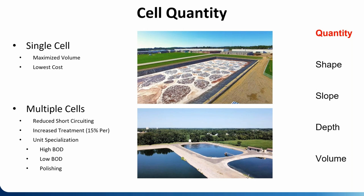Because multiple cells hold the waste in the treatment system longer, we get increased treatment. Our experience is that for every cell we add — up to about four or five — we get about 15% more treatment per cell added. The lagoons also specialize: the first lagoon grows bacteria specialized for higher BOD, the next handles low BOD, and the last is primarily for polishing. Pro tip: you can artificially create more cells without adding an earthen berm by adding a baffle — that creates the same effect and gives you more treatment.